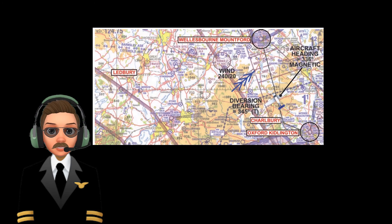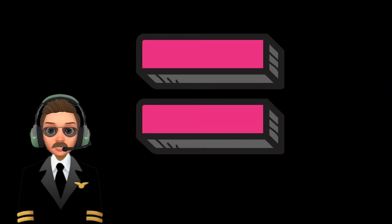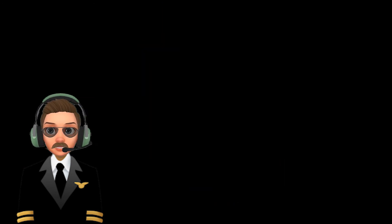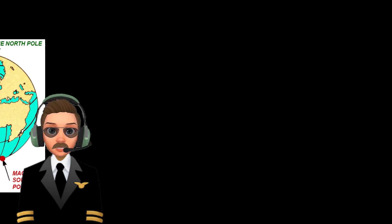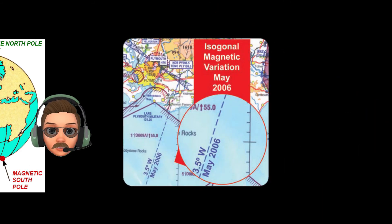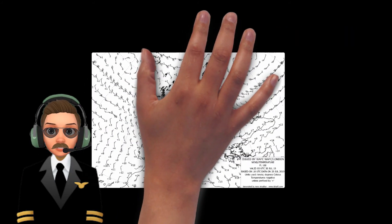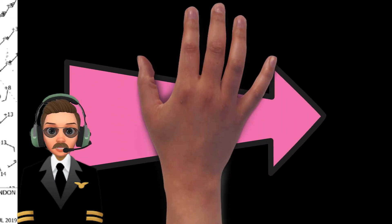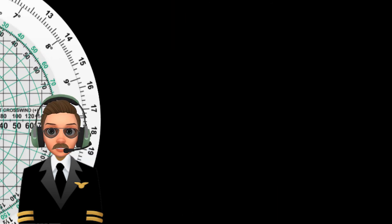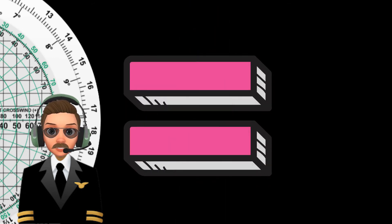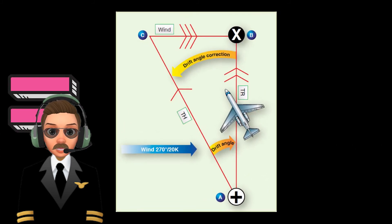How does a pilot calculate the magnetic heading? First, the pilot finds out the true track from the chart using the plotter. Second, the chart has the declination, which is the difference in degrees between the true north and the magnetic north. Third, we figure out the wind predictions. With these predictions and the flight computer we calculate the drift. The drift is the amount of degrees the wind is pushing us — in other words, the difference between heading and track.